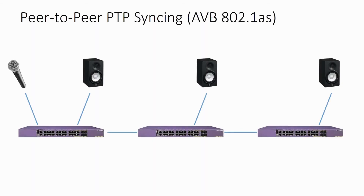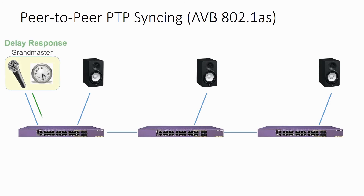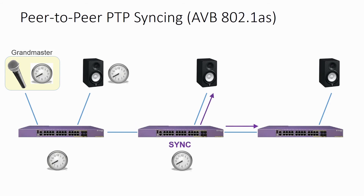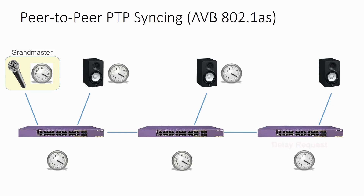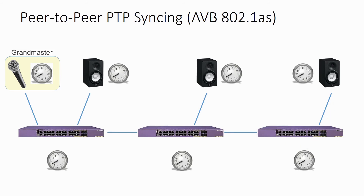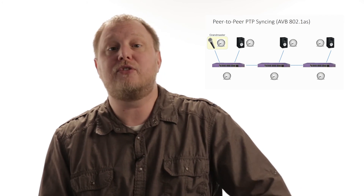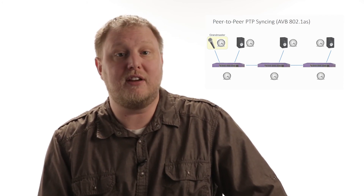802.1AS establishes a peer-to-peer relationship that allows the network to become involved in the time sync process. A grandmaster's closest peer is the switch that it's connected to, and the initial time exchange happens right there. After the network switch obtains its time sync from the grandmaster, it syncs with the next 802.1-capable device, whether that's an end device or another network switch. This is one of the reasons that AVB-capable switches are required, but this shouldn't be viewed as a bad thing — it allows for a much faster, more precise syncing mechanism.